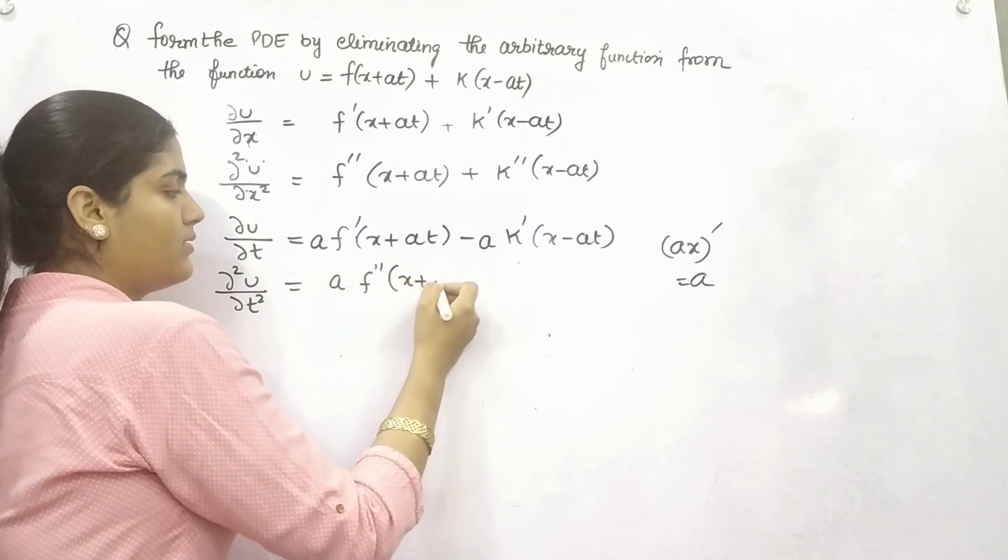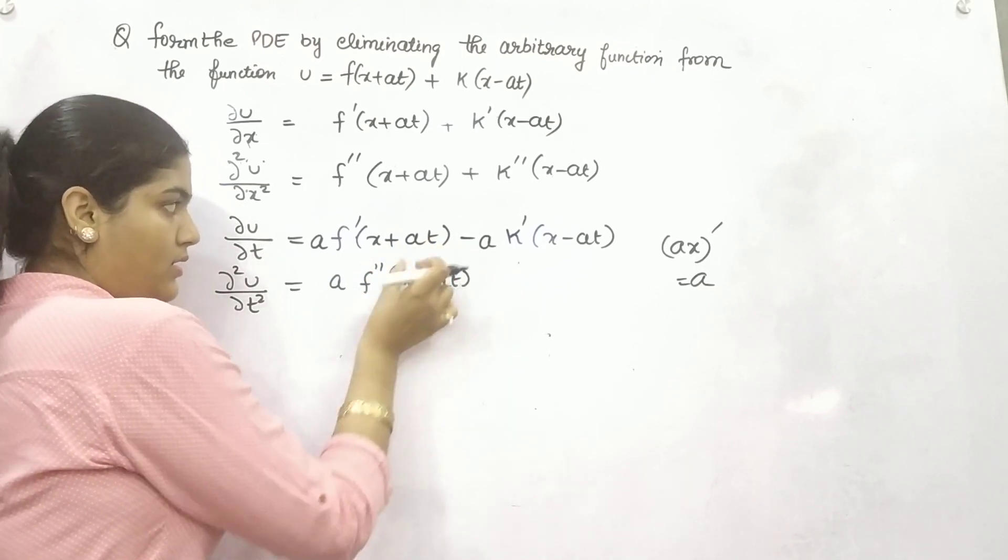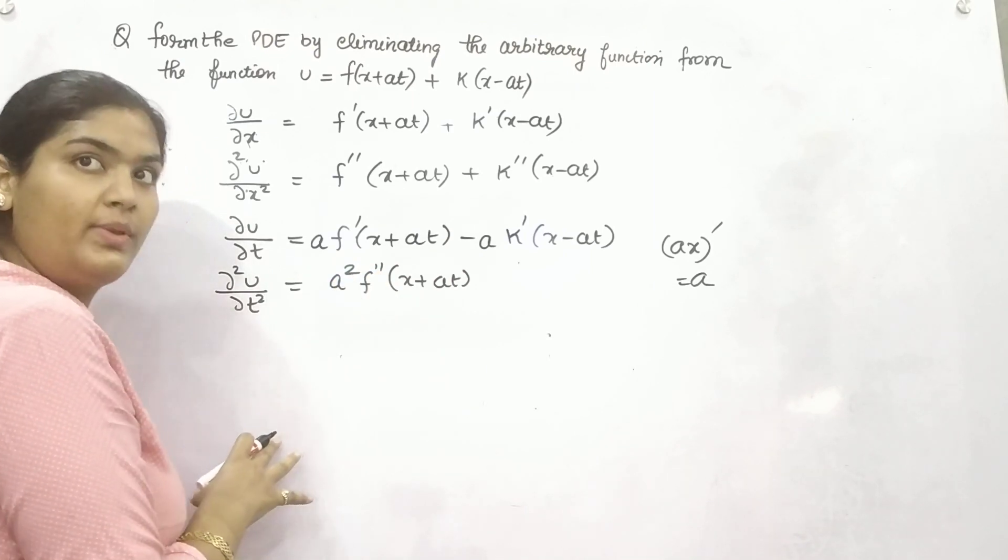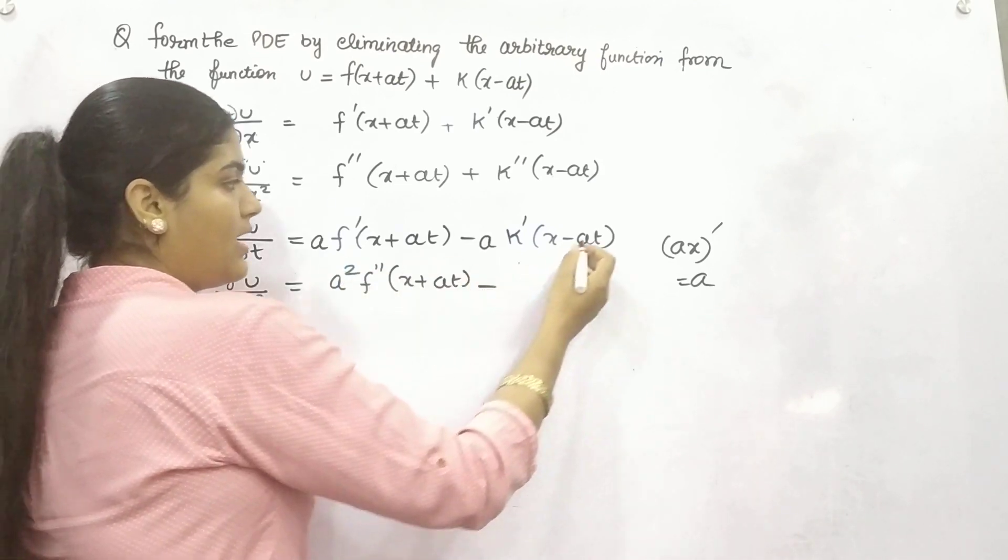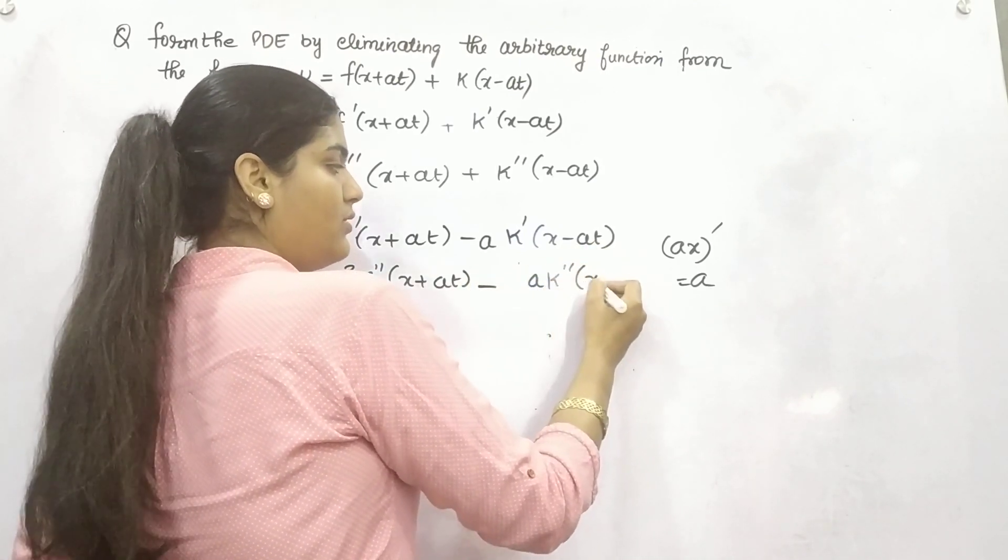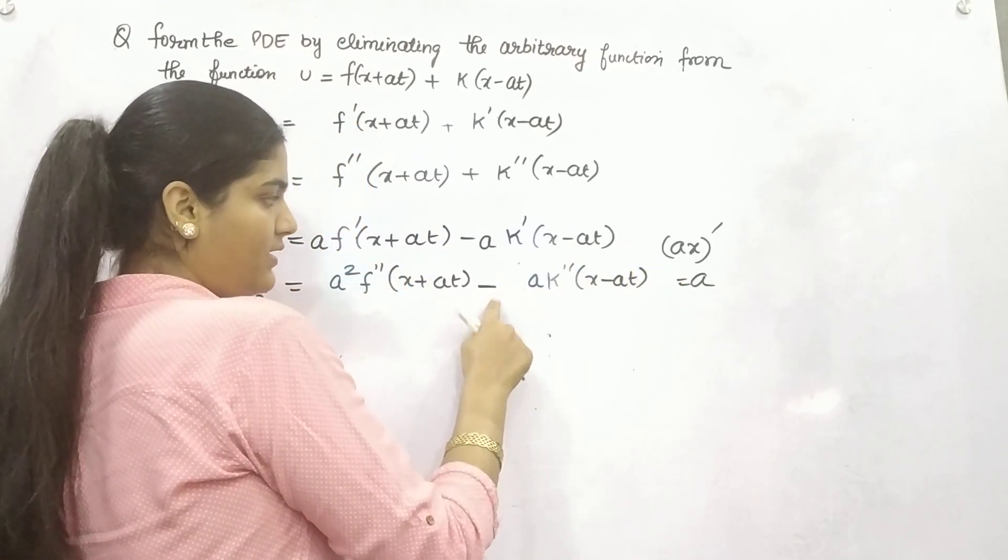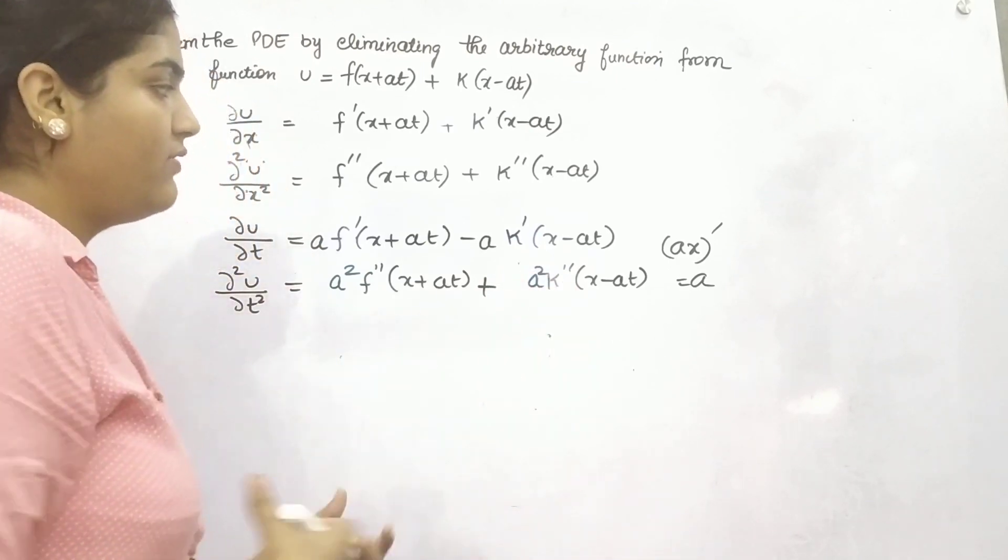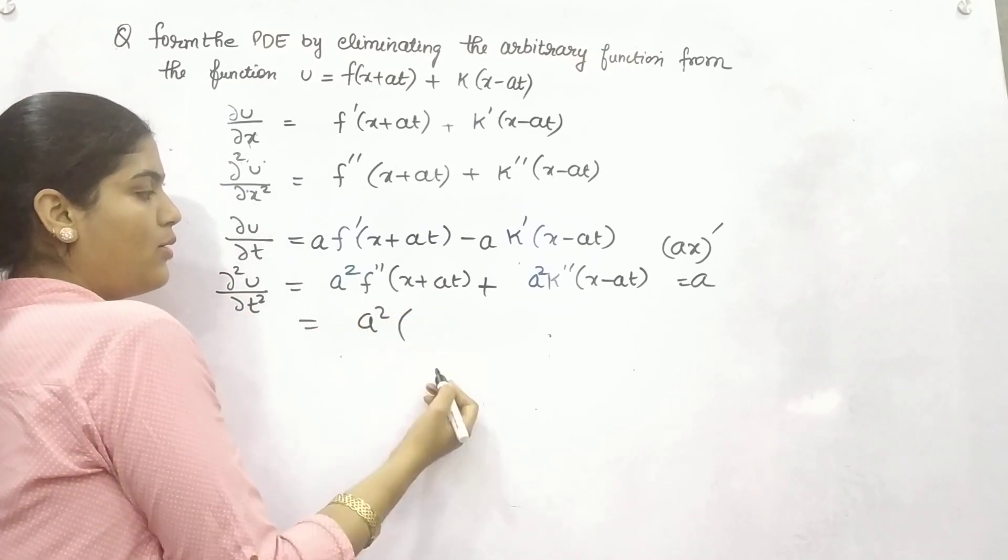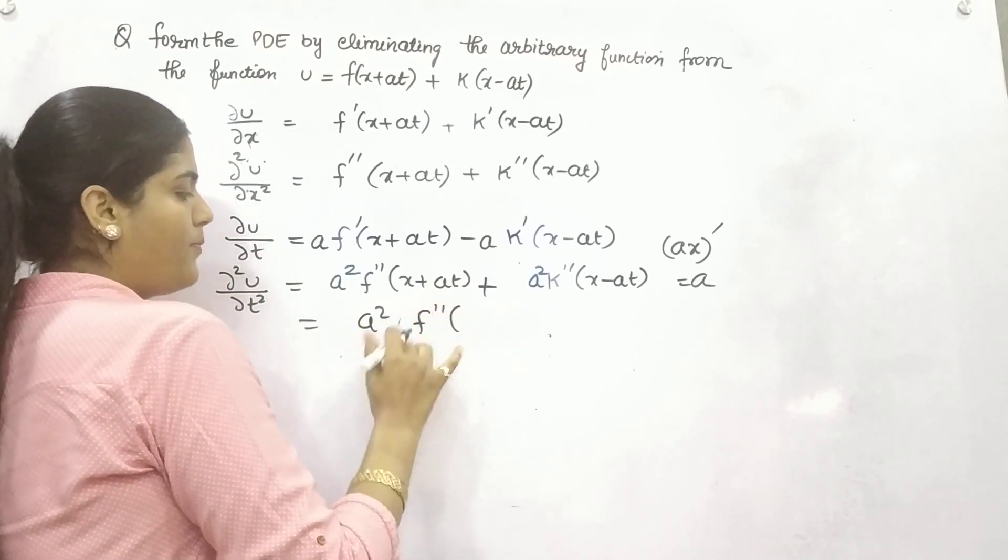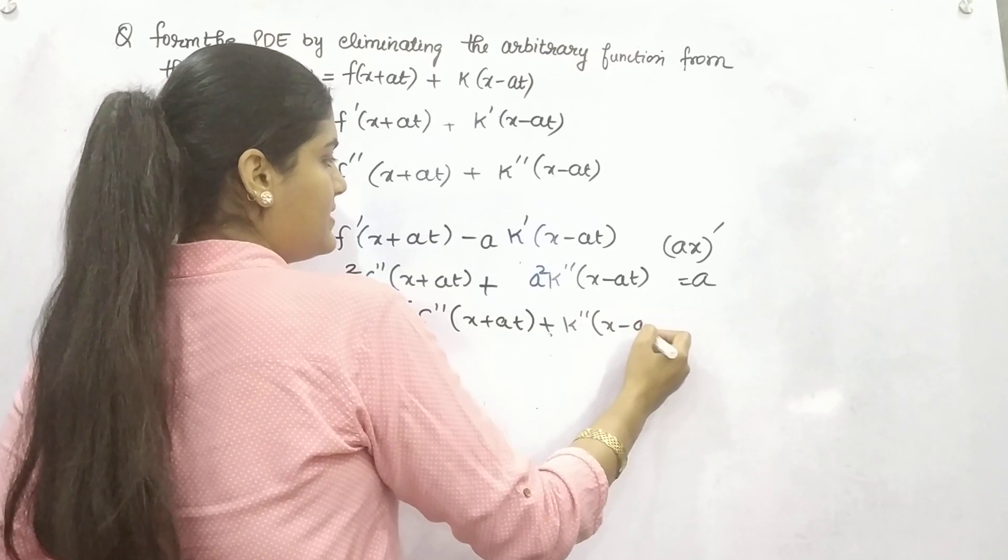Double differentiation of x plus at. When you will take the differentiation of this, a will come out as common, a will come out as differentiation, so a square. Thereafter, double differentiation of this function, now coefficient is minus a, minus a will come out, so it will form plus a square. Now you can take a square common, what is left? x plus at, x minus at.